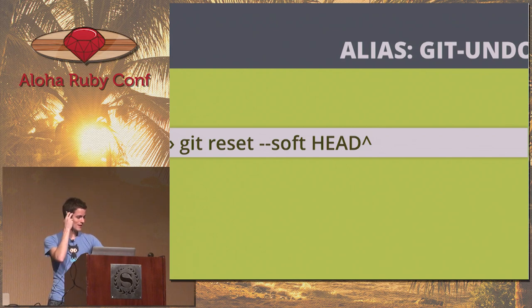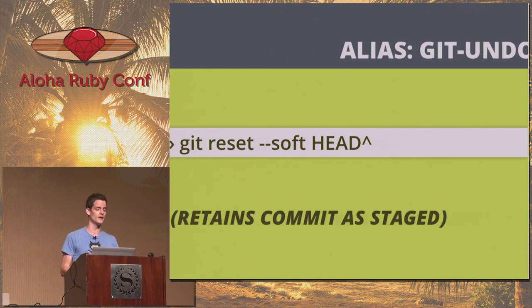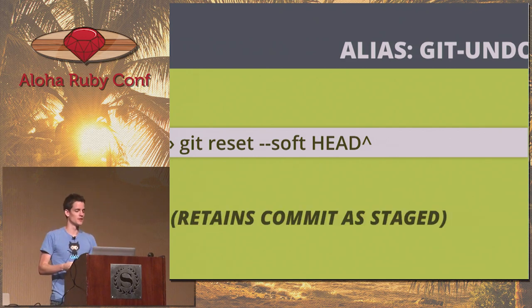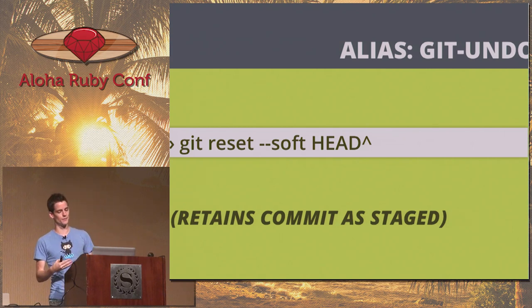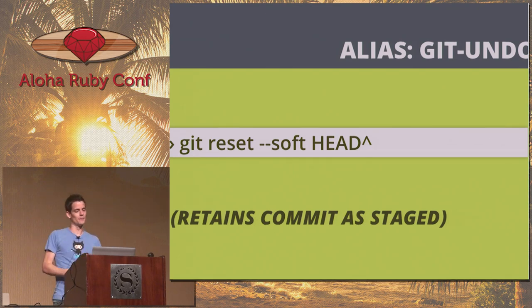Git undo is just an alias I have for git reset --soft HEAD~1 — the previous commit to the current head. I use this way because it retains your commit as staged rather than blowing it all out. Usually I do this when I don't want to amend — I want to roll back the commit, still work on it, and keep it prepped to be committed again.